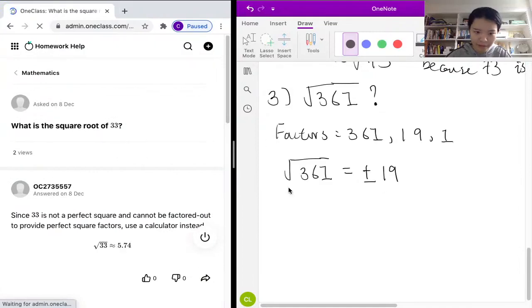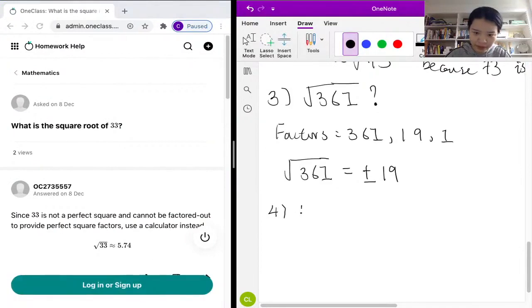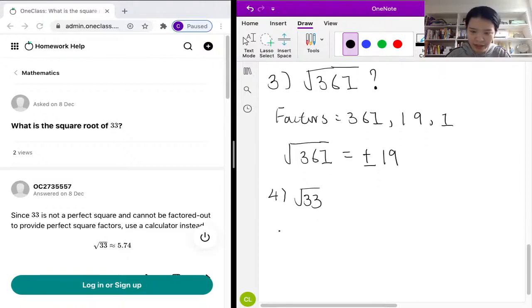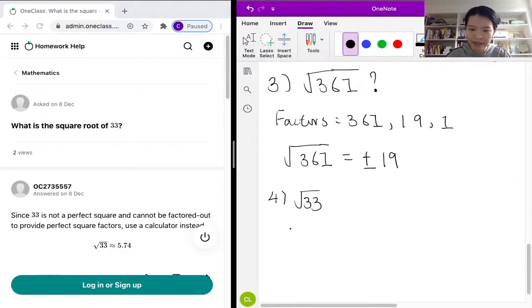The fourth problem is asking us what is the square root of 33. We know that 33 is actually not a perfect square, like 19.